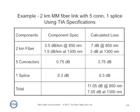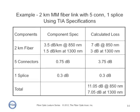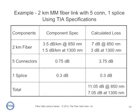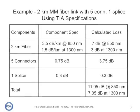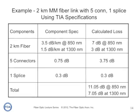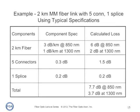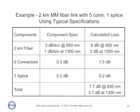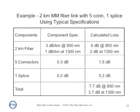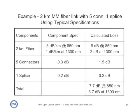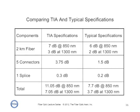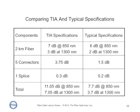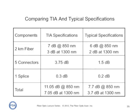This is the loss budget for an example: a two-kilometer multimode link with five connectors and one splice. Using TIA specifications, it calculates out at about 11 dB at 850 nanometers and 7 dB at 1300 nanometers. If we recalculate with typical component specs, the loss of the link goes down to about 7.7 dB at 850 nanometers or 3.7 dB at 1300 nanometers. When you compare TIA worst-case specifications and typical specifications on a link like this, you'll see the difference is quite large — over 3 dB at both 850 and 1300 nanometers.